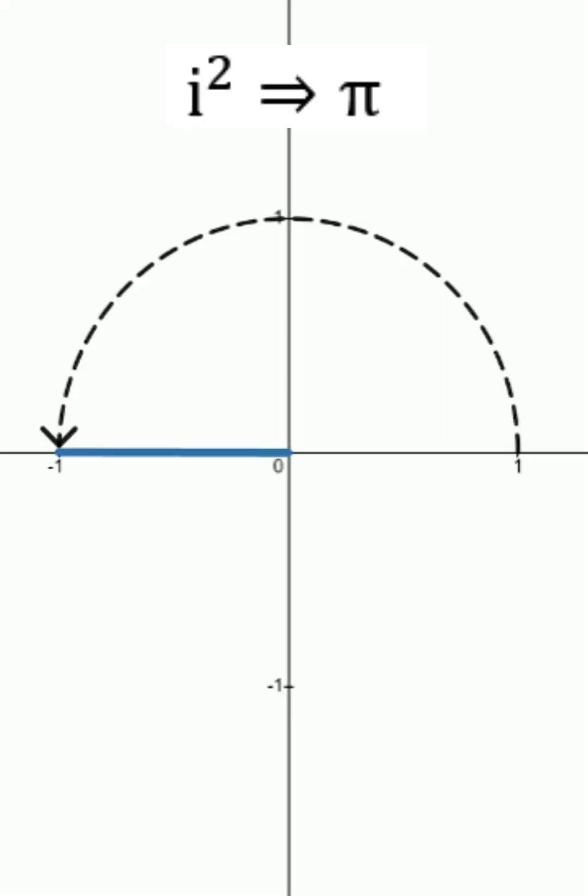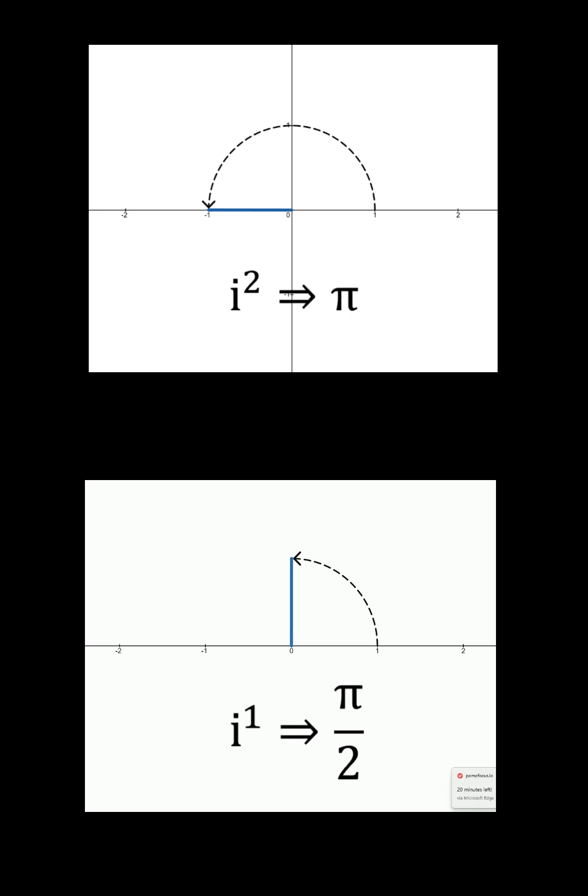But if i squared corresponds to a 180 degree rotation, what does a rotation of i correspond to? Well, if multiplication by negative 1 rotates numbers 180 degrees, maybe its square root rotates half of that, say 90 degrees.